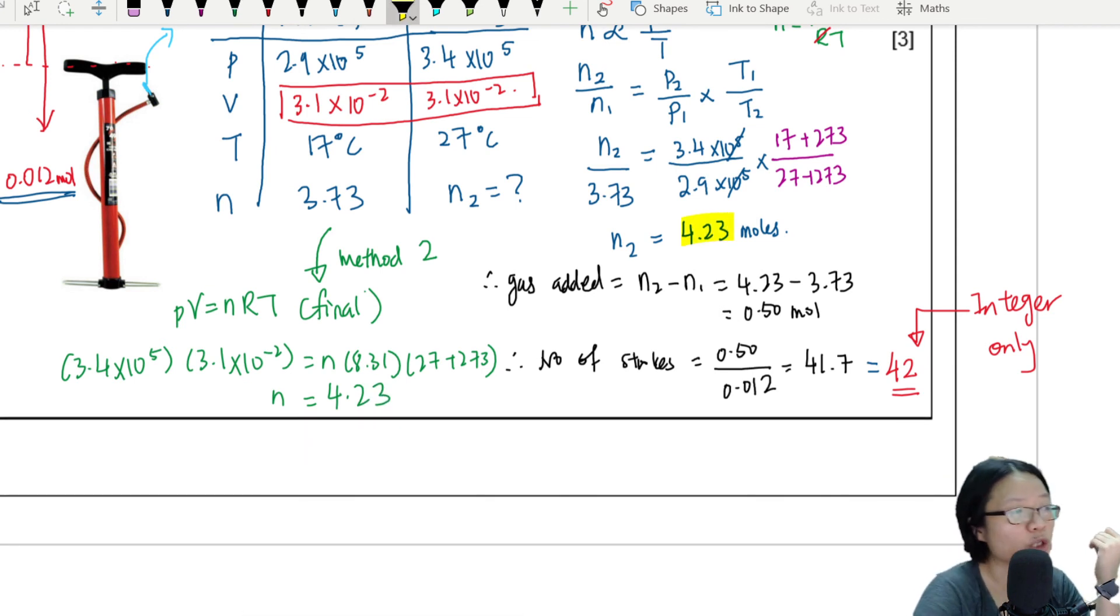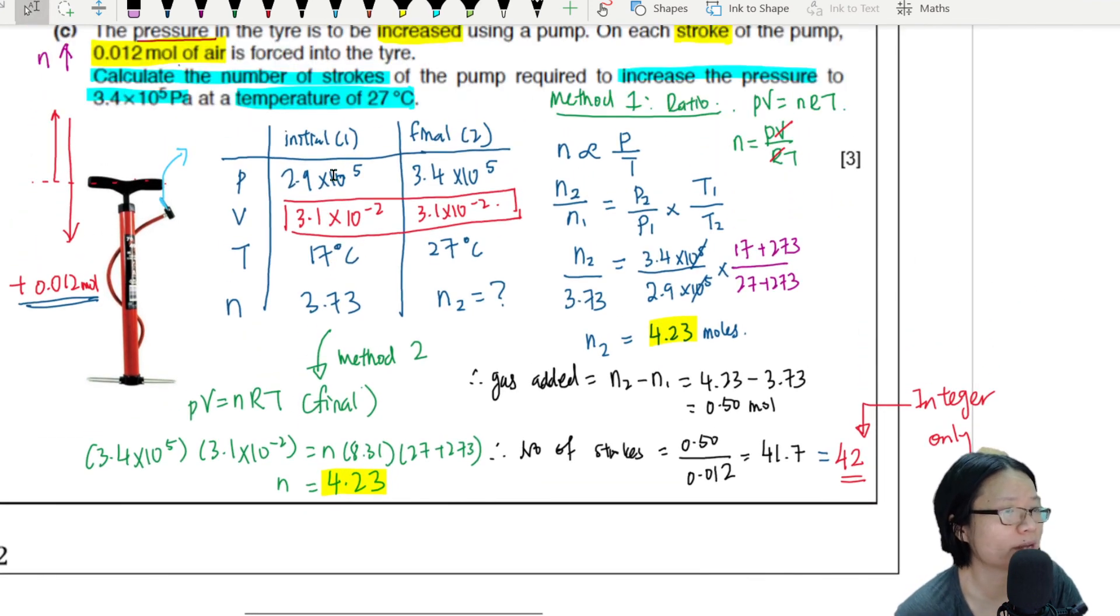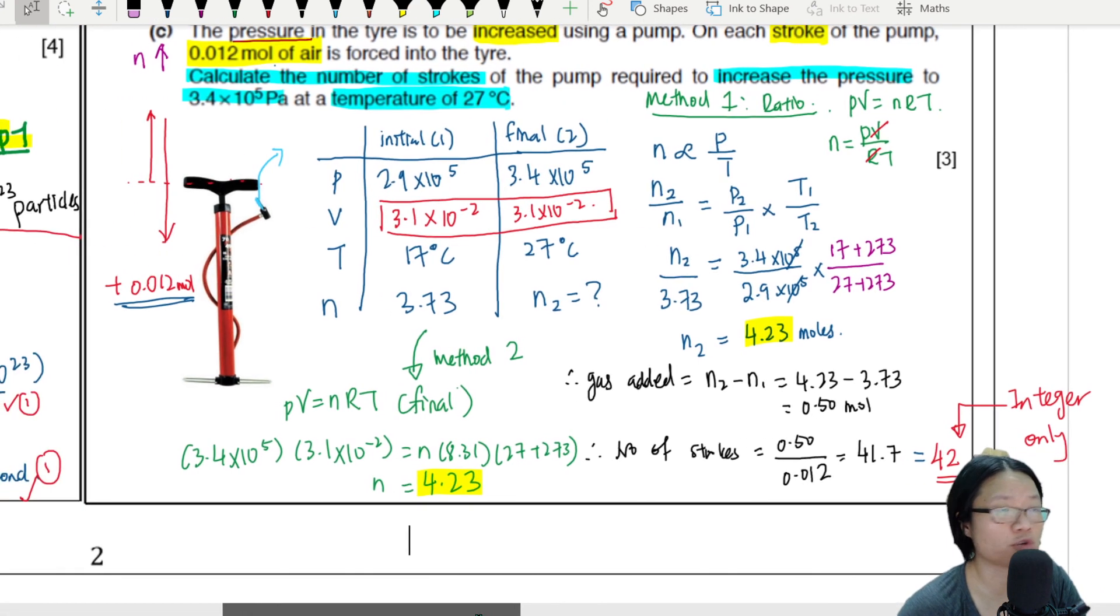So it's the same. You like which one you want to do? I prefer ratio because less to press, but you know what, free country, up to you.